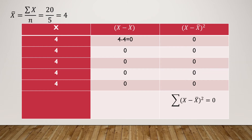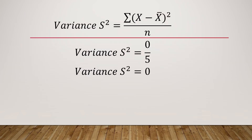In the first column we have all observations; in the second column we compute x minus x̄. Since all observations equal the arithmetic mean, subtracting gives all zeros. The squares of those zeros are also zeros, so the sum of (x − x̄)² = 0. Putting this into the variance formula — σ² = Σ(x − x̄)² / n — we get 0 / 5 = 0. Since standard deviation is the square root of variance, it is also 0.